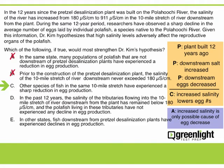Answer choice C says: Other species of fish in the same 10-mile stretch have experienced a sharp reduction in egg production. Does this strengthen the conclusion that high salinity lowers polar fish egg production? No. This merely tells us that the egg production problem is not unique to polar fish, suggesting that whatever is causing the reduced polar fish egg production may also be affecting other fish. Since there's nothing here that strengthens the causal relationship between increased salinity and polar fish egg production, we'll eliminate it.